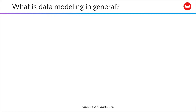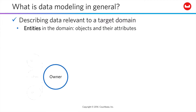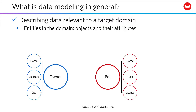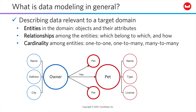Data modeling in general is the notion of shaping the data that's relevant to whatever domain you're working with — what are you writing your software about? You look at the entities in the domain, the various objects and their attributes, like pets and owners and the properties that describe them. Then you look at the relationships among these entities, which entities belong to which and how.